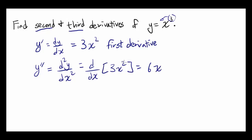which equals 6x. You bring this 2 down, 3 times 2 is 6, and 2 minus 1 is 1, so you have 6x.